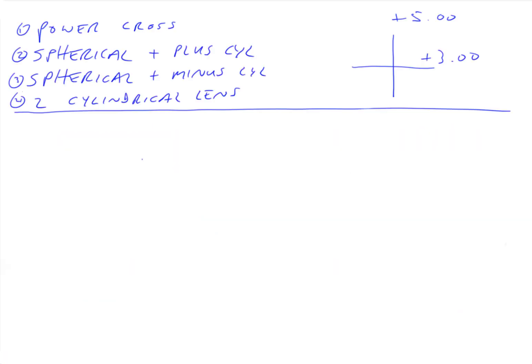Okay, so we've talked about how this is a toric system and how we can describe this toric system using a spherical lens and a plus cylindrical lens, and how you can build this toric system using a spherical lens and a minus cylindrical lens.